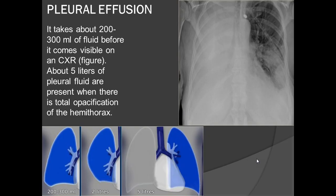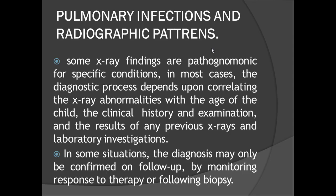Whenever you see a complete white-out of a lung, about five liters of pleural fluid are typically present — this is pleural effusion, another important finding. Confirm it on ultrasound and perform ultrasound-guided aspiration, then send fluid for DR and protein analysis to differentiate transudate from exudate.